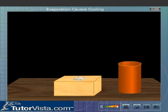What do you observe? We observe that the water below the calorimeter freezes to form ice. This shows that ether has absorbed heat from water and also from its surroundings, resulting in a decrease in temperature of the surroundings.